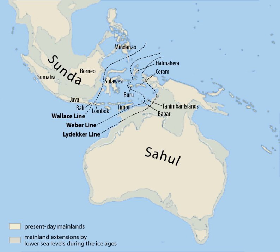When sea level was decreased by 30 to 40 meters or more, land bridges connected the islands of Borneo, Java, and Sumatra to the Malay Peninsula and mainland Asia. Because sea level has been 30 meters or more lower throughout much of the last 800,000 years, the current state of Borneo, Java, and Sumatra as islands has been a relatively rare occurrence throughout the Pleistocene.